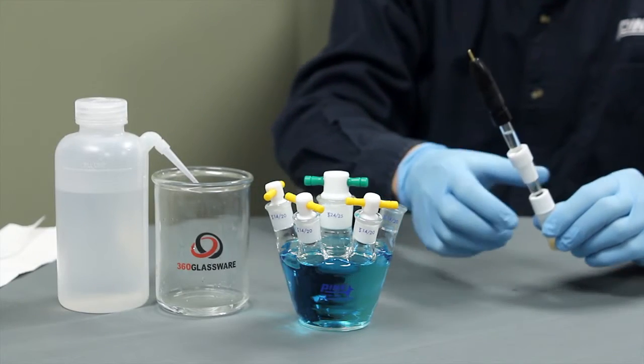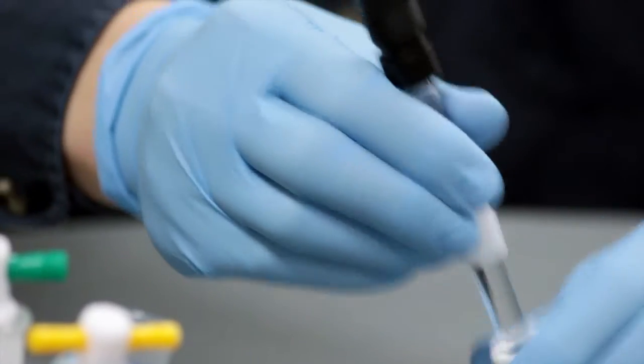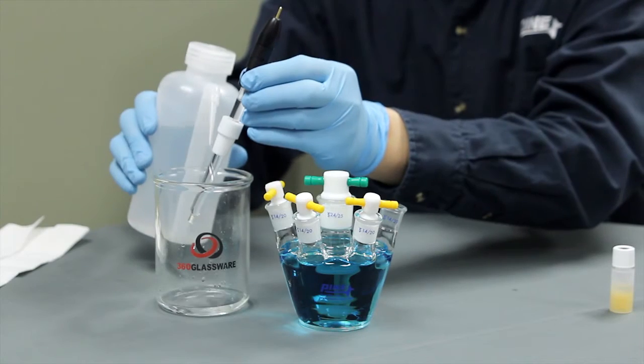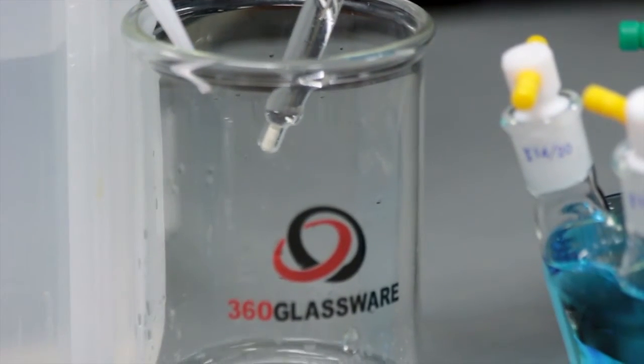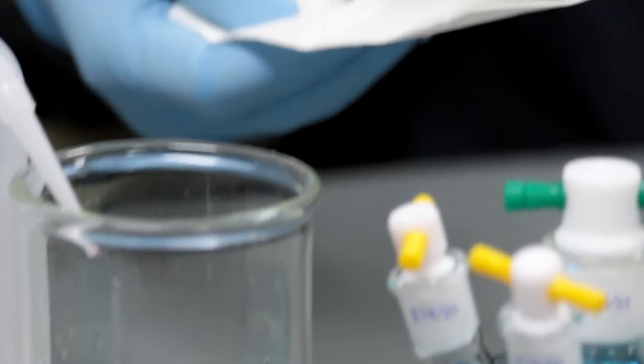Let's discuss how to use the electrode. First, remove the storage bottle and rinse the tip. Make sure to dry the tip with a paper towel.